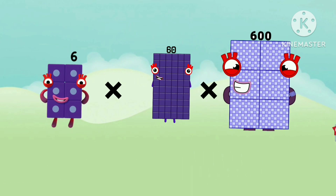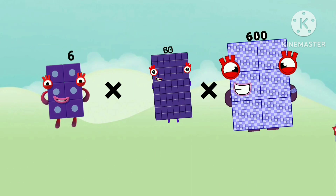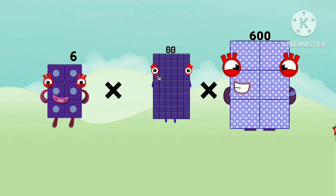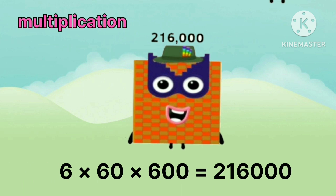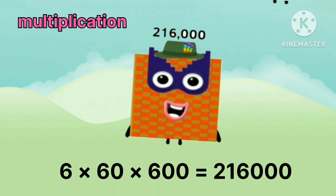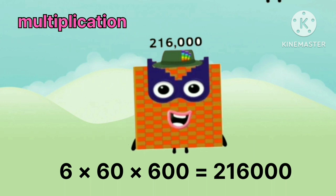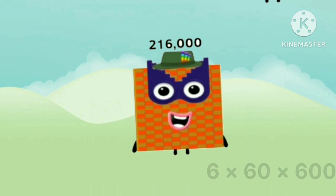6. Multiply by 60. Multiply by 600. Equals 2 lakhs 16000.